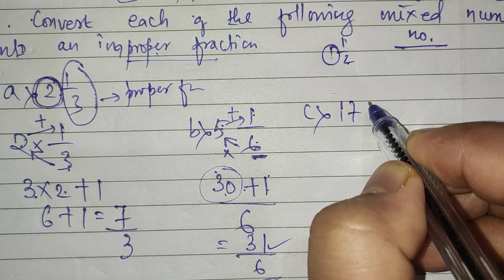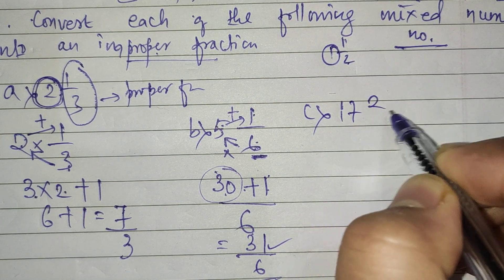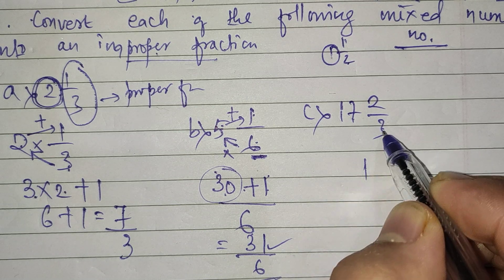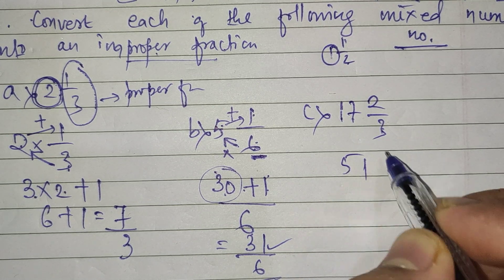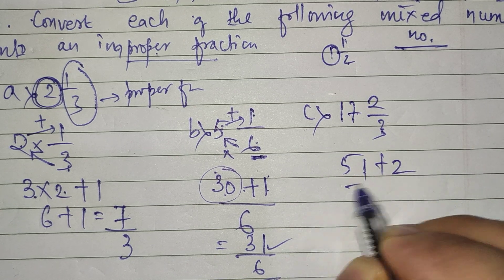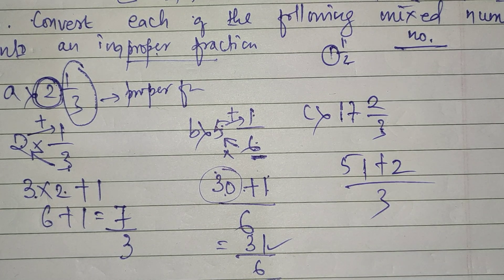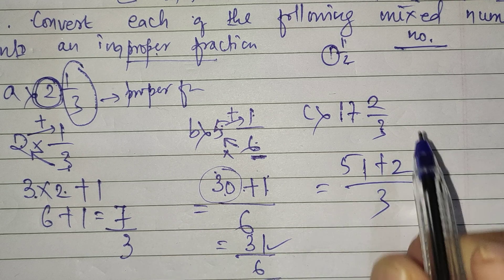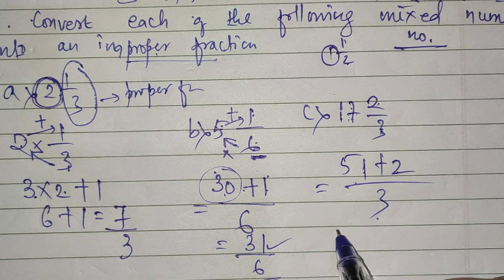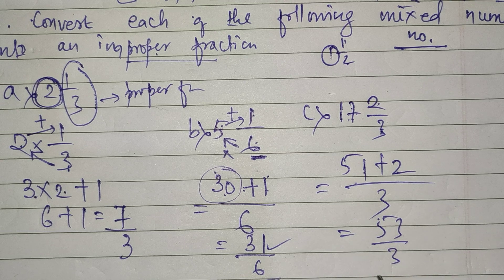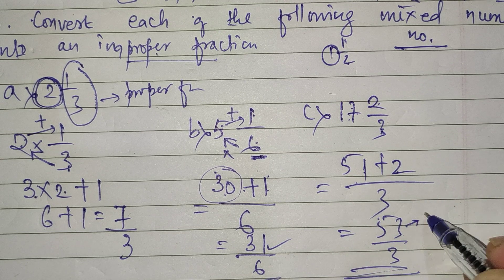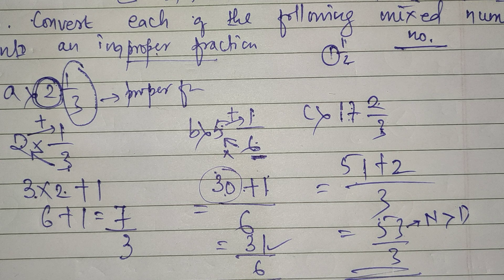Proceeding to part C: 17 whole 2 by 3. Multiply 17 times 3 to get 51, then add 2 to get 53, keeping denominator 3. So 53 by 3. This is your improper fraction because the numerator is greater than the denominator.